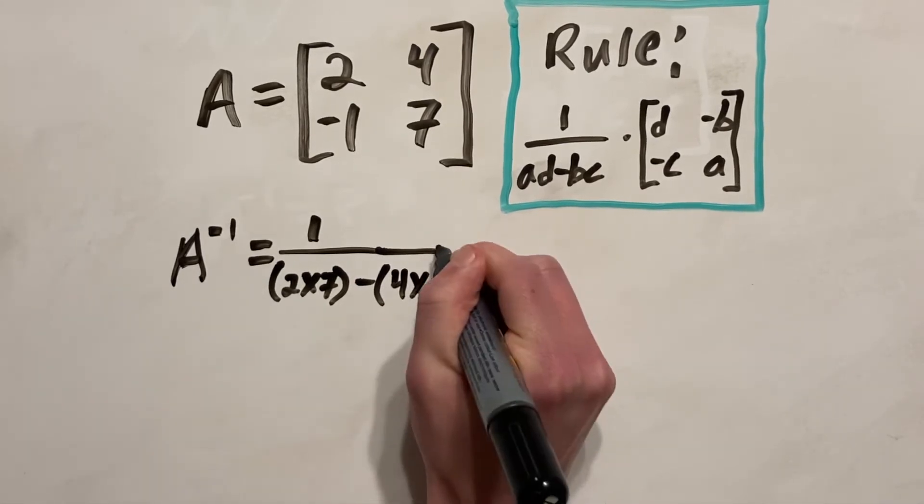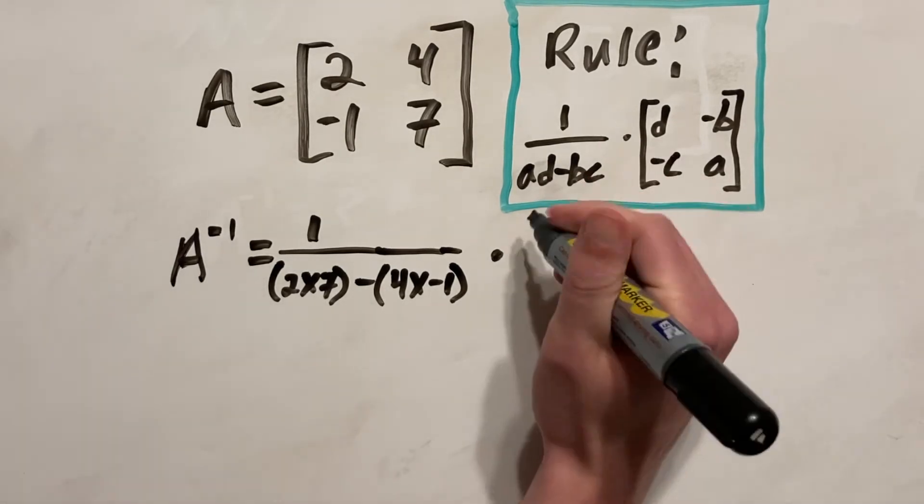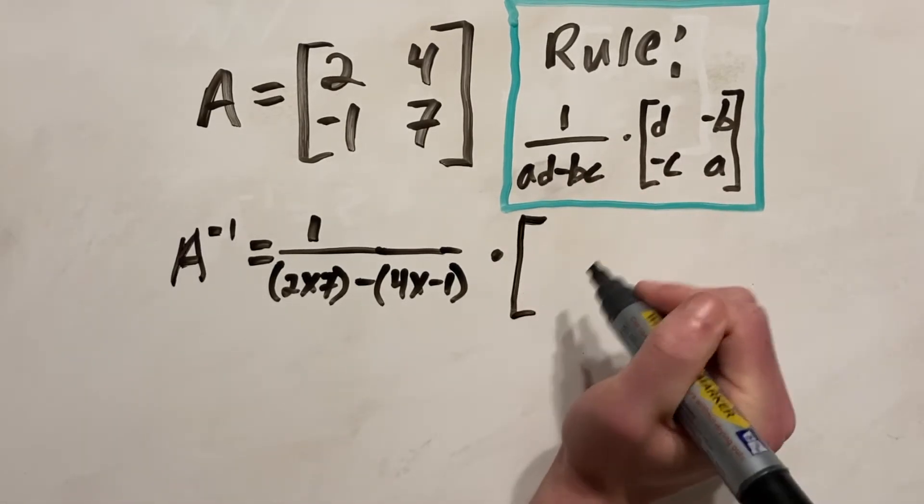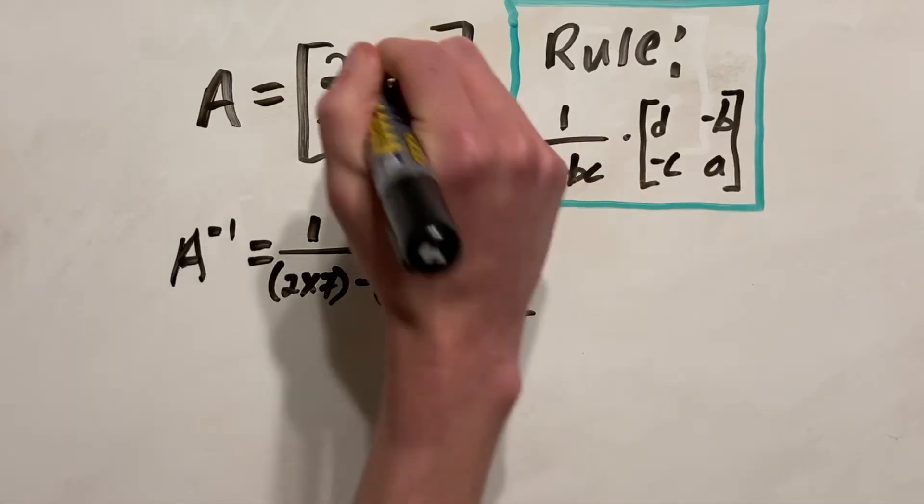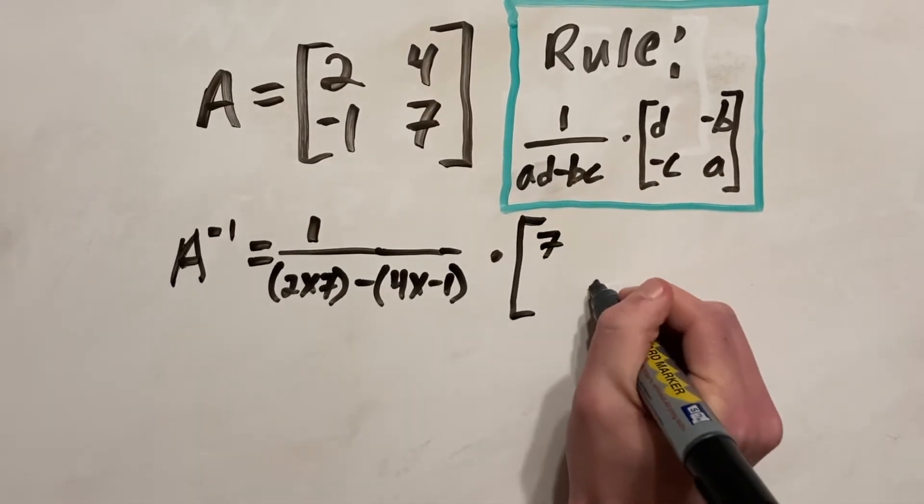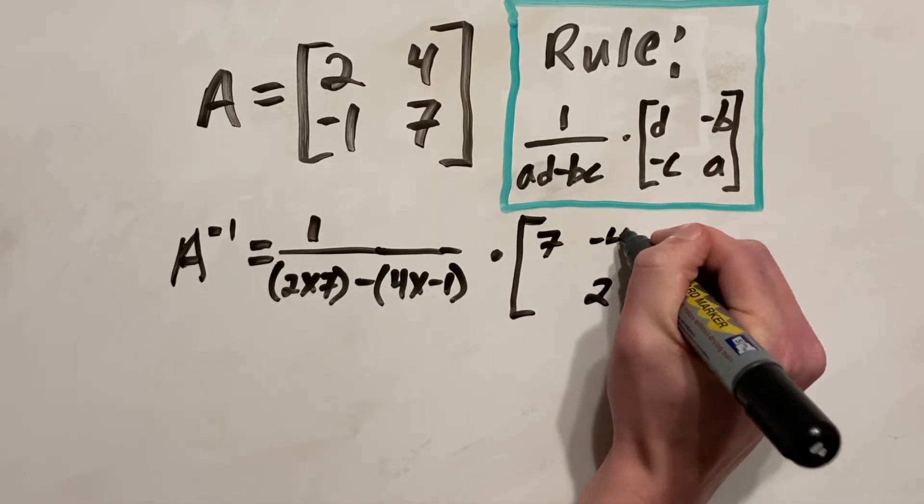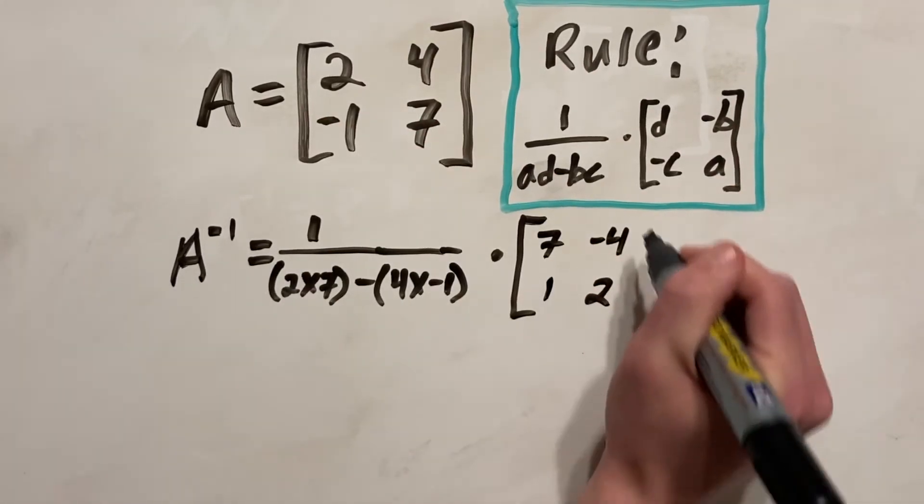And we're going to multiply all that by a matrix, and we're going to swap A and D around. So that becomes 7 and 2. And then we're going to make B and C the same, but we're going to flip the sign. So we're going to multiply it by negative 1. So 4 becomes minus 4 and negative 1 becomes 1.